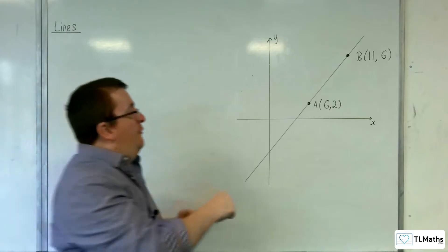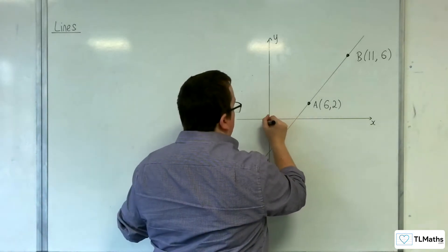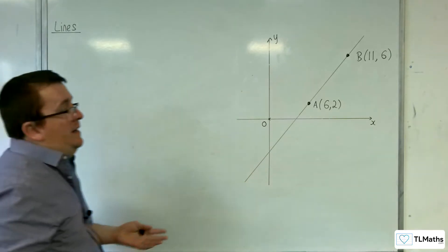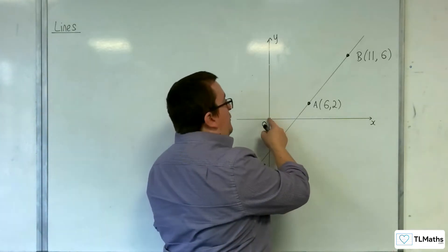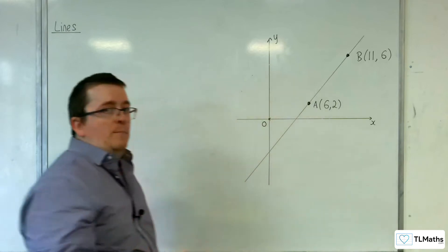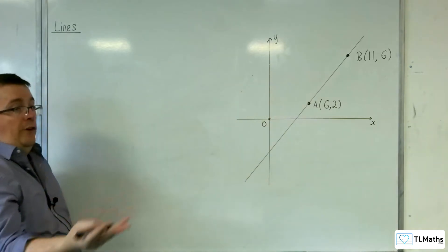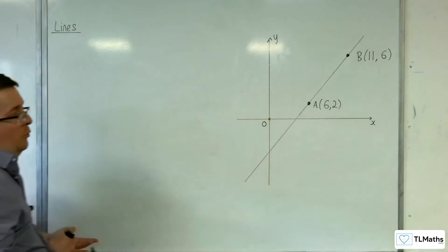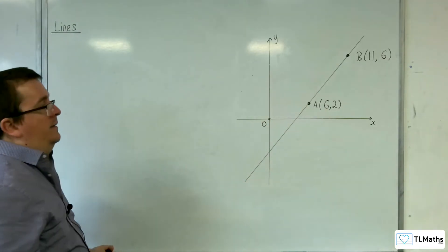So we need to get from the origin onto the line. The first thing I would use is the vector OA to get me onto the line. Now, I could use OB, that's perfectly fine, but I'll use OA because it's more straightforward for how we're describing it here.